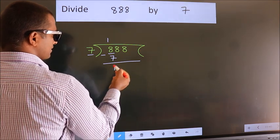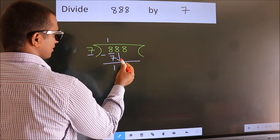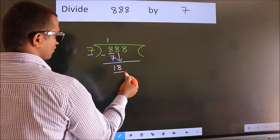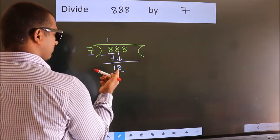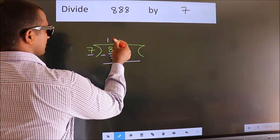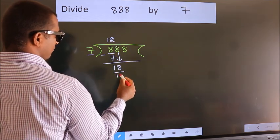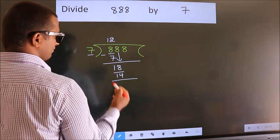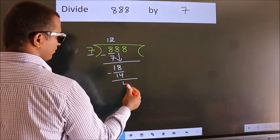After this, bring down the beside number, so 8 down, so 18. A number close to 18 in 7 table is 7 2s 14. Now we subtract. We get 4.